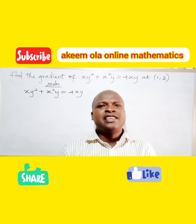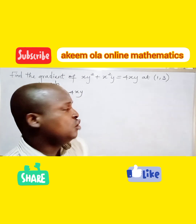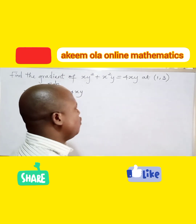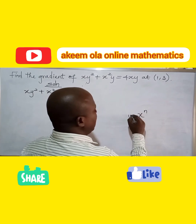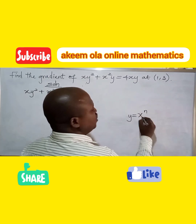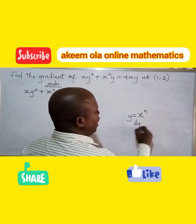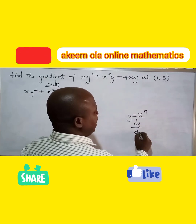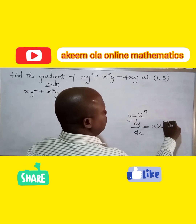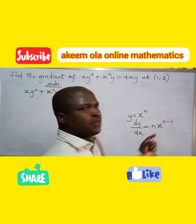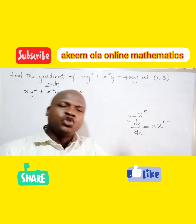Implicit differentiation is where both x and y are differentiated together, but when you differentiate y, you attach dy/dx to it. The formula is: if y equals x raised to power n, then dy/dx equals n times x to the power n minus one.